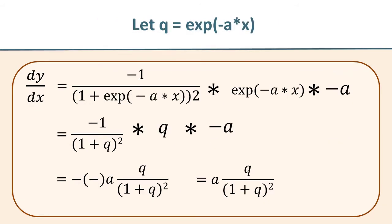We're going to continue our simplification. And it would just be so much easier if instead of writing the exponent of minus a times x, we just make a substitution and say, let q be the exponent of minus a times x. So we can simplify by taking that equation that we just wrote down. And as we do our substitution, the first term becomes minus 1 over 1 plus q squared. The second term becomes q, just q itself. And the third term is still minus a. So as we carry out the multiplication, we're going to get, first of all, two minus signs. First, we'll get one of those from the first term, the minus 1 in the numerator. And we get the second minus sign from the minus a at the end. So those two minus signs are going to cancel each other out. Then we're going to have a 1 plus q, the whole quantity squared in the denominator, and a factor of q in the numerator.